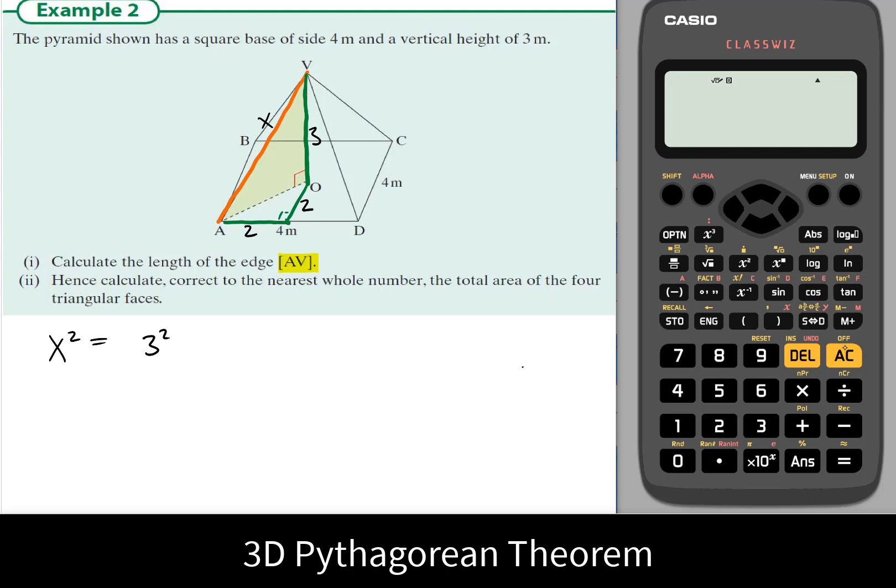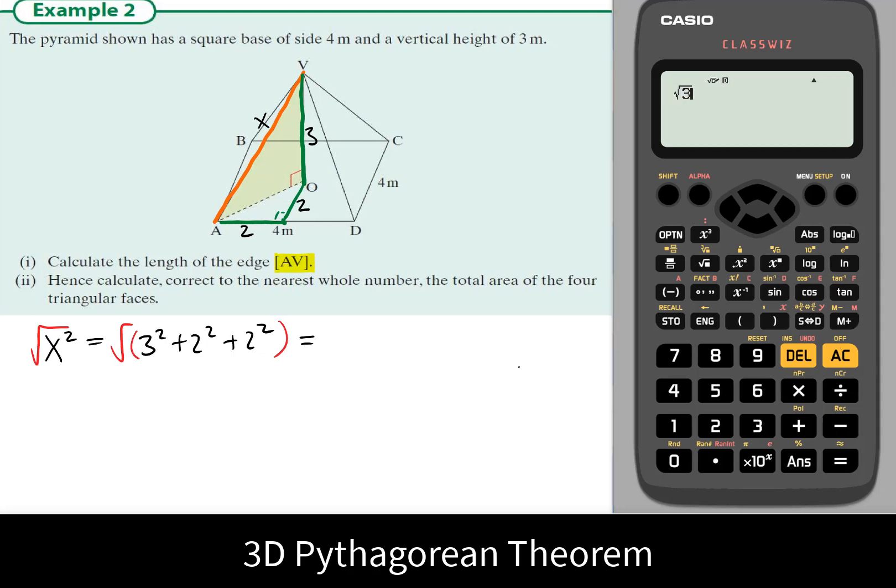Therefore the slant height, x squared, would be equal to 3 squared plus 2 squared plus 2 squared. So if we square root both sides here, we can see that x would be, I'm going to use the calculator, is the square root of 3 squared plus 2 squared plus 2 squared, which is 9 and 4 and 4, which is the square root of 17.